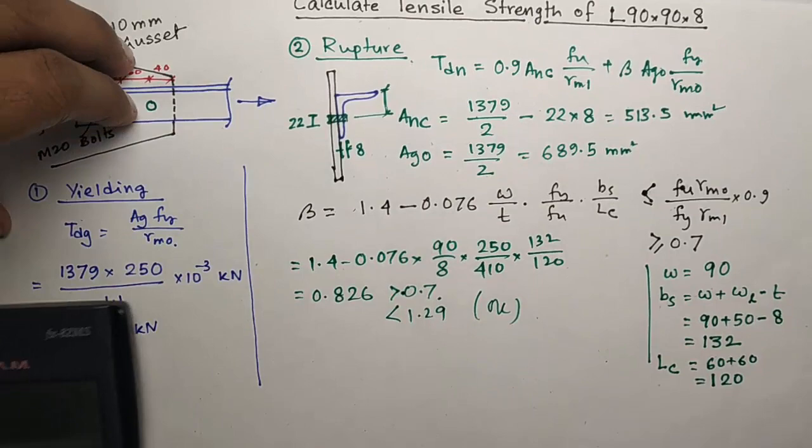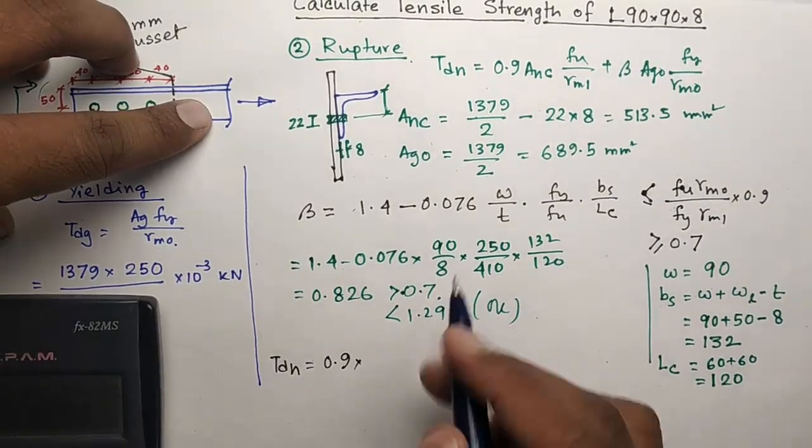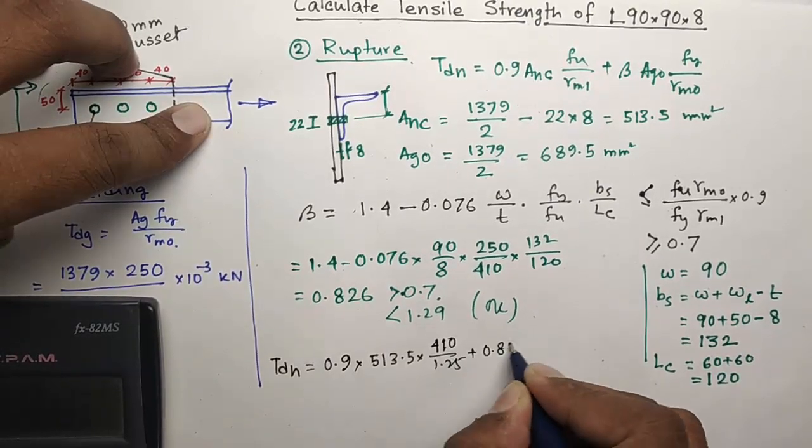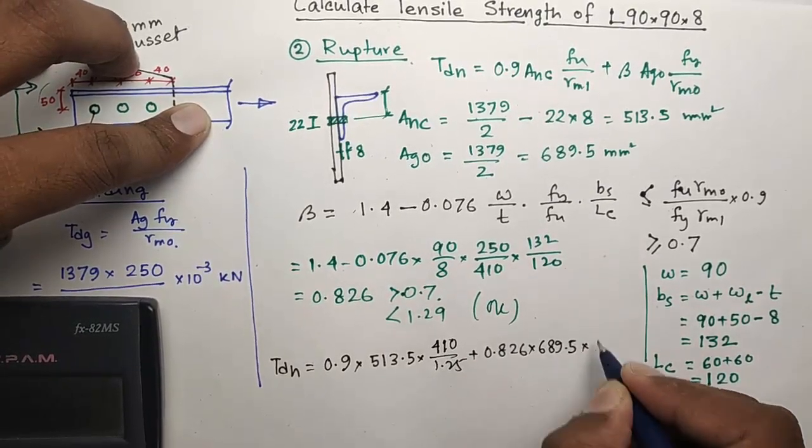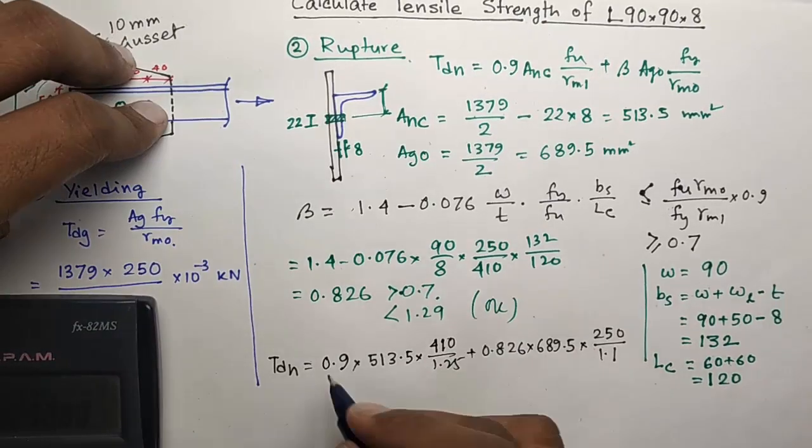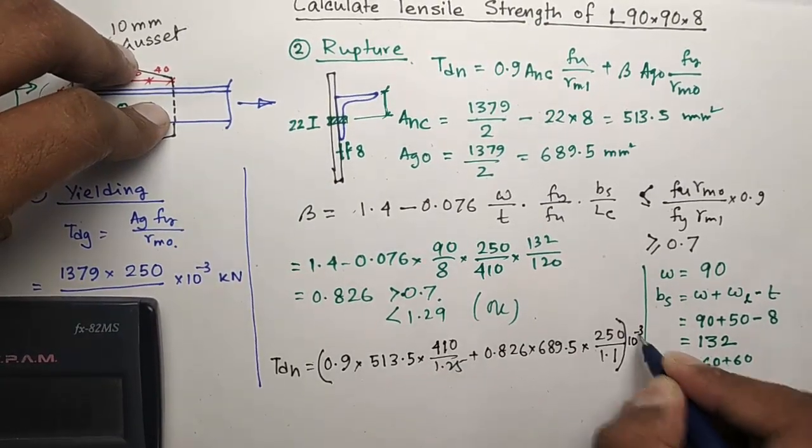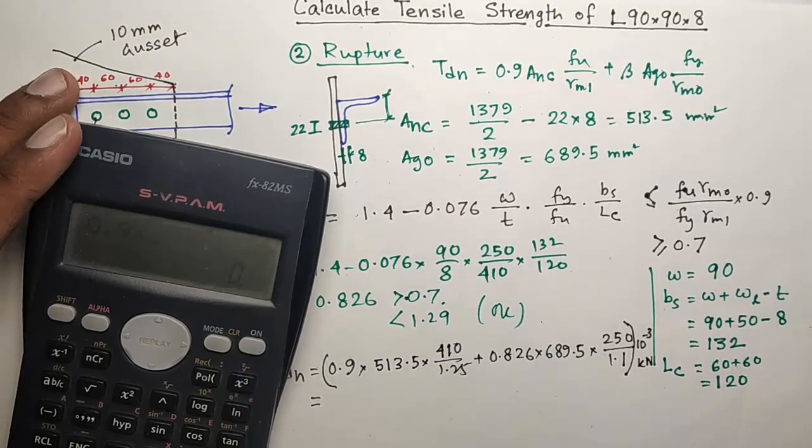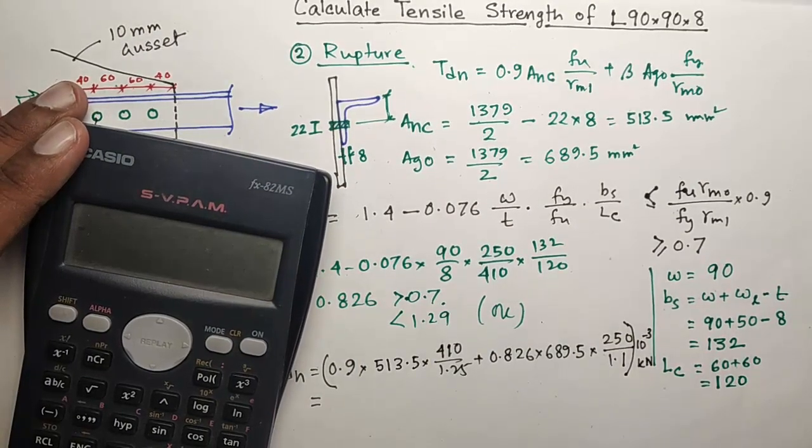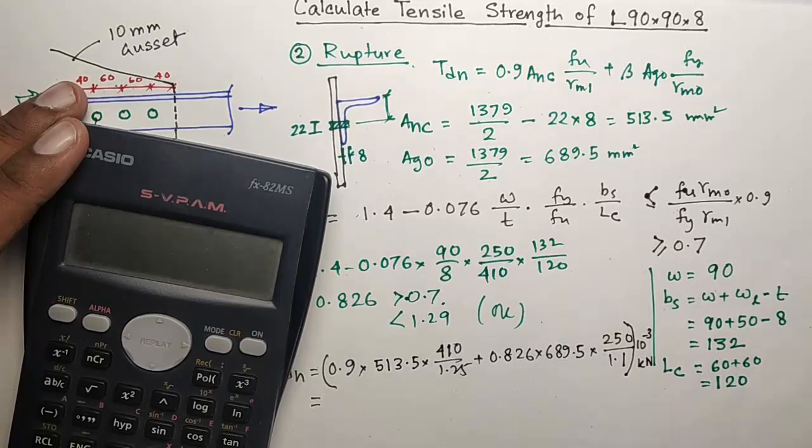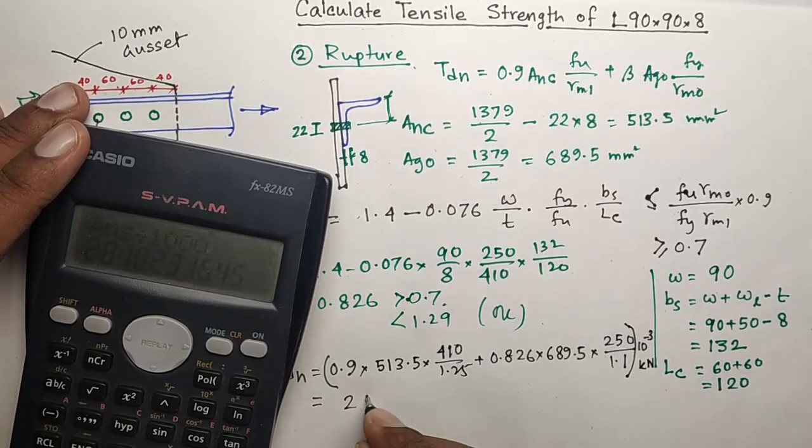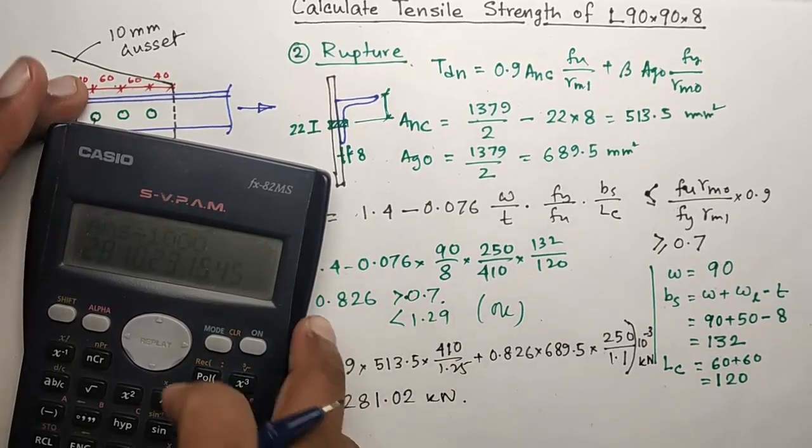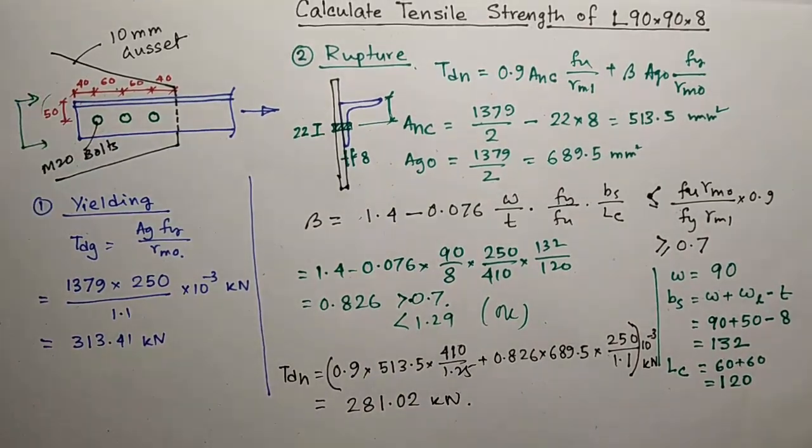Now calculate TDN. FU is 410 times gamma M0 1.1 times 0.9 by FY 250 times gamma M1 1.25, giving 1.29, okay. We got beta 0.826. TDN equals 281.02 kilonewton. This is the design strength due to rupture.